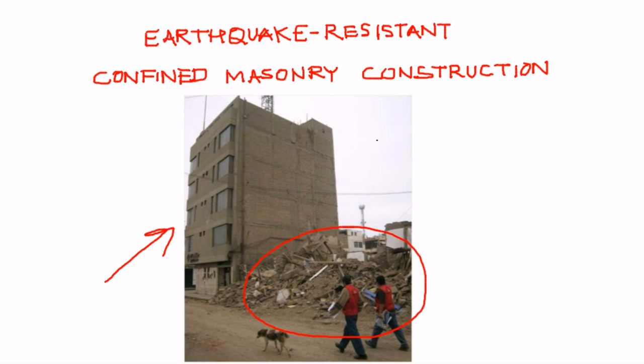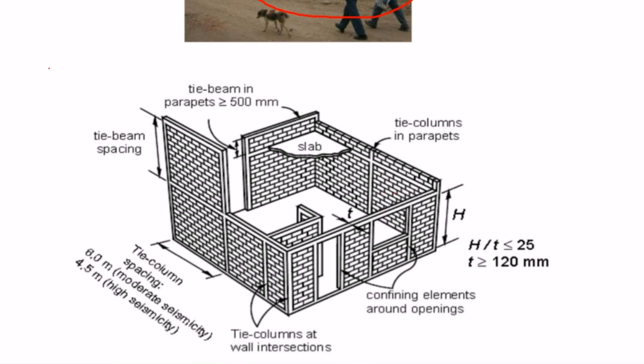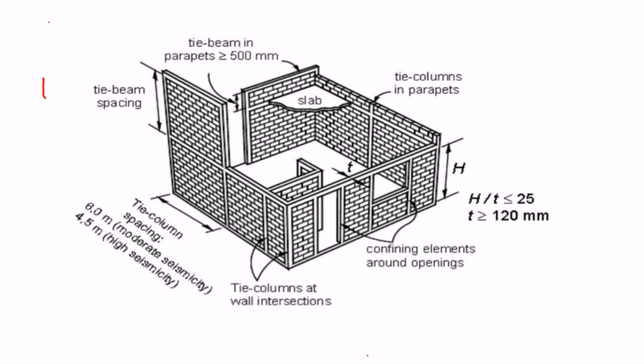After a major earthquake like this one, engineers and others often ask: what makes one building stand and the other collapse in an earthquake? What are the key features or characteristics of an earthquake safe or earthquake resistant building? When it comes to confined masonry, there are several considerations that need to be taken into account when planning and designing a confined masonry building.